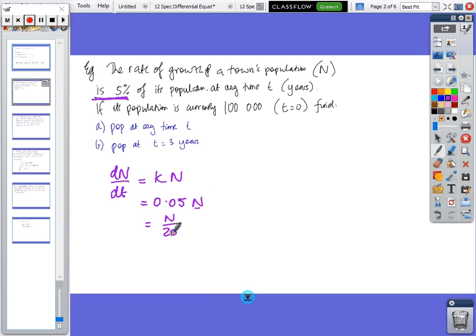Just to get rid of the decimals, 0.05 is the same as 1/20. Next step is we flip it, so we got dt/dn equals 20/n, so t equals the integral of 20/n with respect to n so the letters match up.